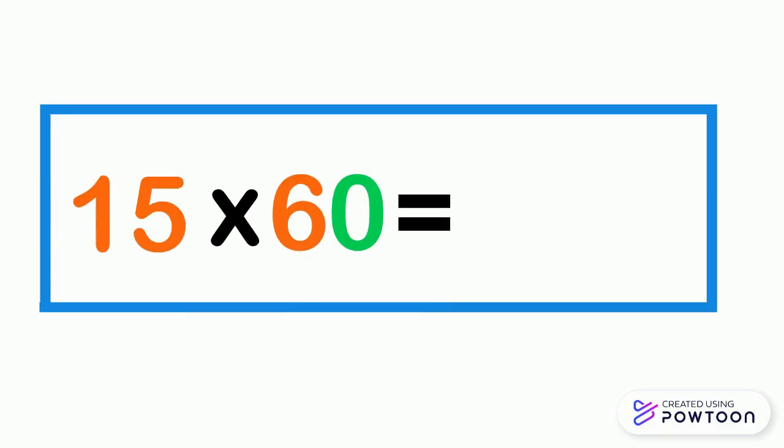Another example, multiply 15 by 60. 15 times 6 equals 90, then we put the 0 to the right side of 90, which is 900, so 15 times 60 equals 900.